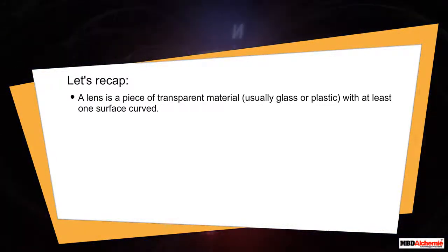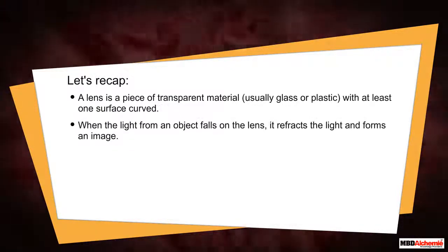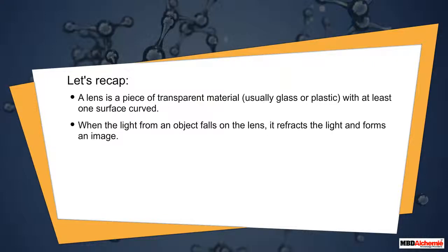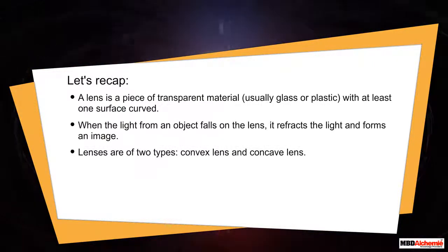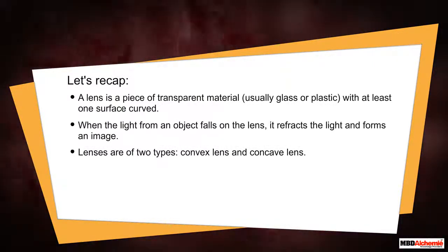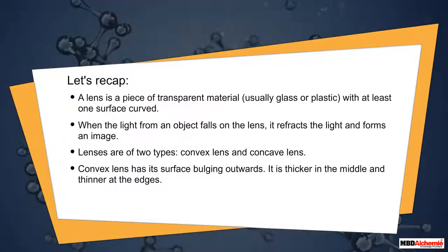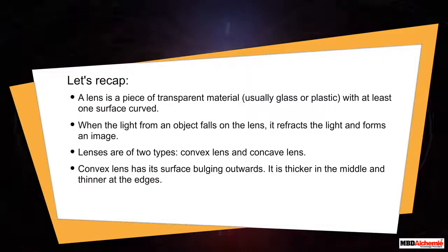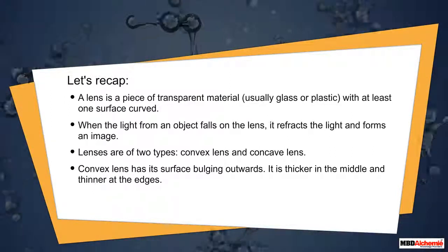Let's recap. A lens is a piece of transparent material, usually glass or plastic, with at least one surface curved. When the light from an object falls on the lens, it refracts the light and forms an image. Lenses are of two types: convex lens and concave lens. A convex lens has its surface bulging outwards — it is thicker in the middle and thinner at the edges.